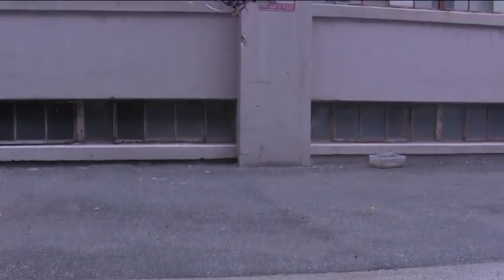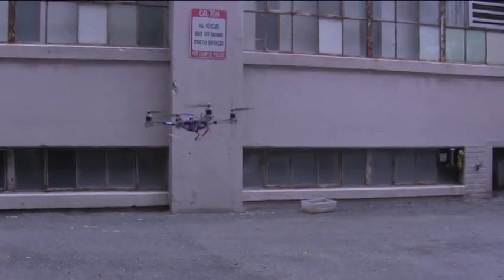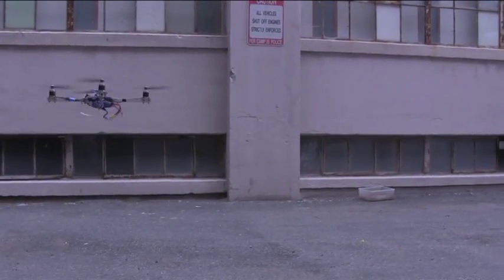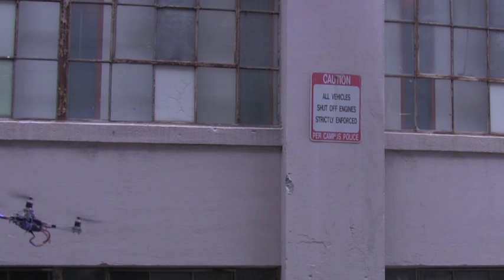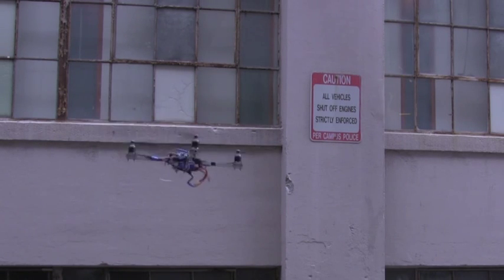If I tilt the quadcopter at a steeper angle, you can see the difference in motor speeds is even more extreme. If I tap on the quadcopter, displacing it from its equilibrium position, you can see how the motors compensate and rotate the quadcopter back into a stable equilibrium.